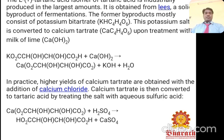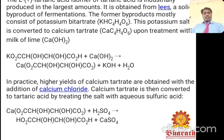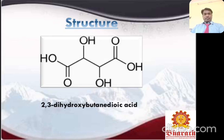Tartaric acid is obtained as a byproduct of fermentation. The byproduct mostly consists of potassium bitartrate. Potassium salt is converted to calcium tartrate upon treatment with milk of lime, giving higher yields of calcium tartrate. The addition of calcium chloride further converts it, and calcium tartrate is treated with dilute sulfuric acid to give tartaric acid. Its structure is 2,3-dihydroxybutanedioic acid.